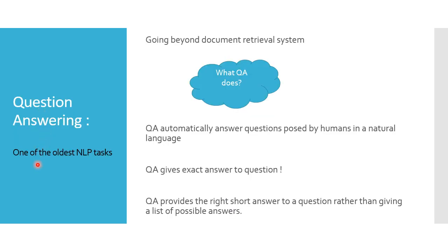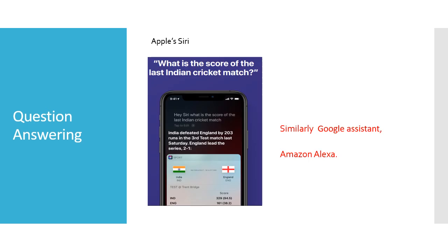Question answering is one of the oldest NLP tasks. In information retrieval, we get a list of documents matching our query, but in question answering we either get the actual answer to the question or a short descriptive paragraph related to it — automatically answering questions posed by humans. Apple Siri, Google Assistant, and Amazon Alexa are commonly used virtual assistants that we can use to get answers to specific questions.